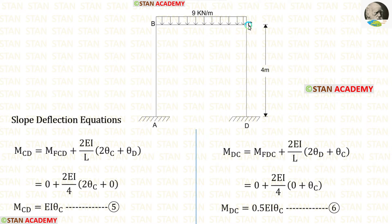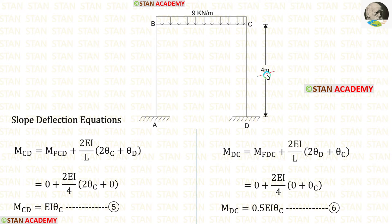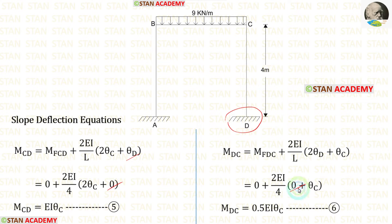Now let us make the slope deflection equations in column CD. In the equations, let us apply the fixed end moments, which are 0. The length of CD is 4. At point D there is a fixed support, so there will be no slope — theta D equals 0. Finally, in column CD we have made two equations.